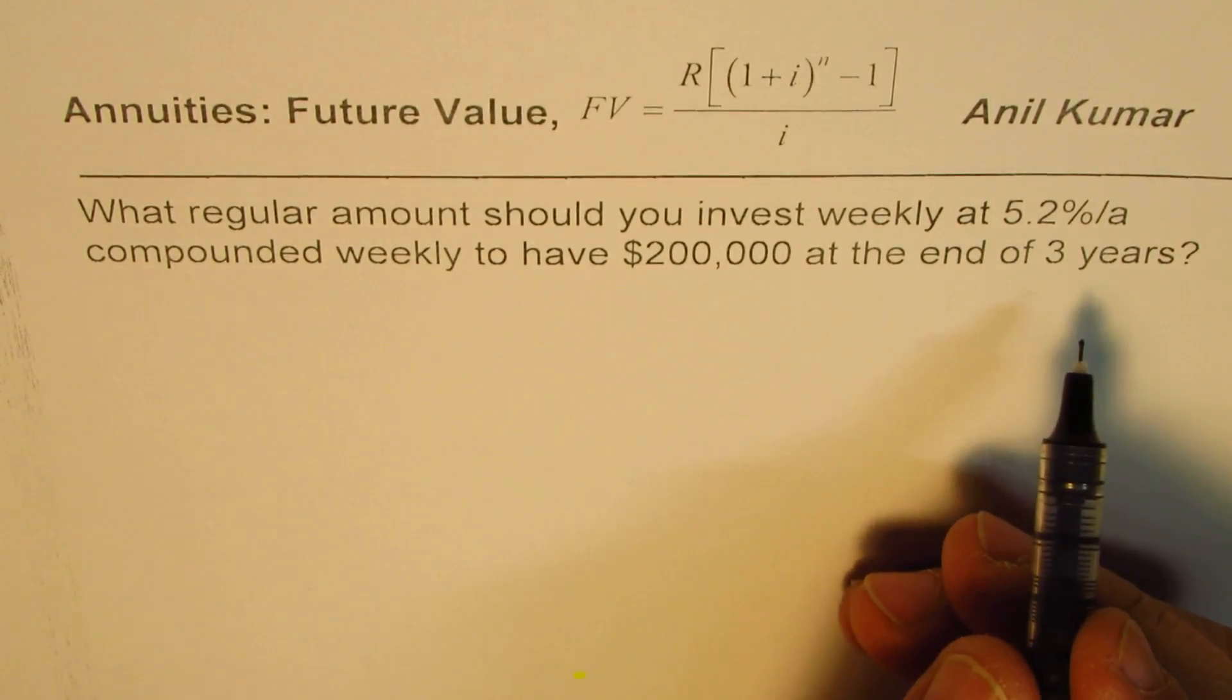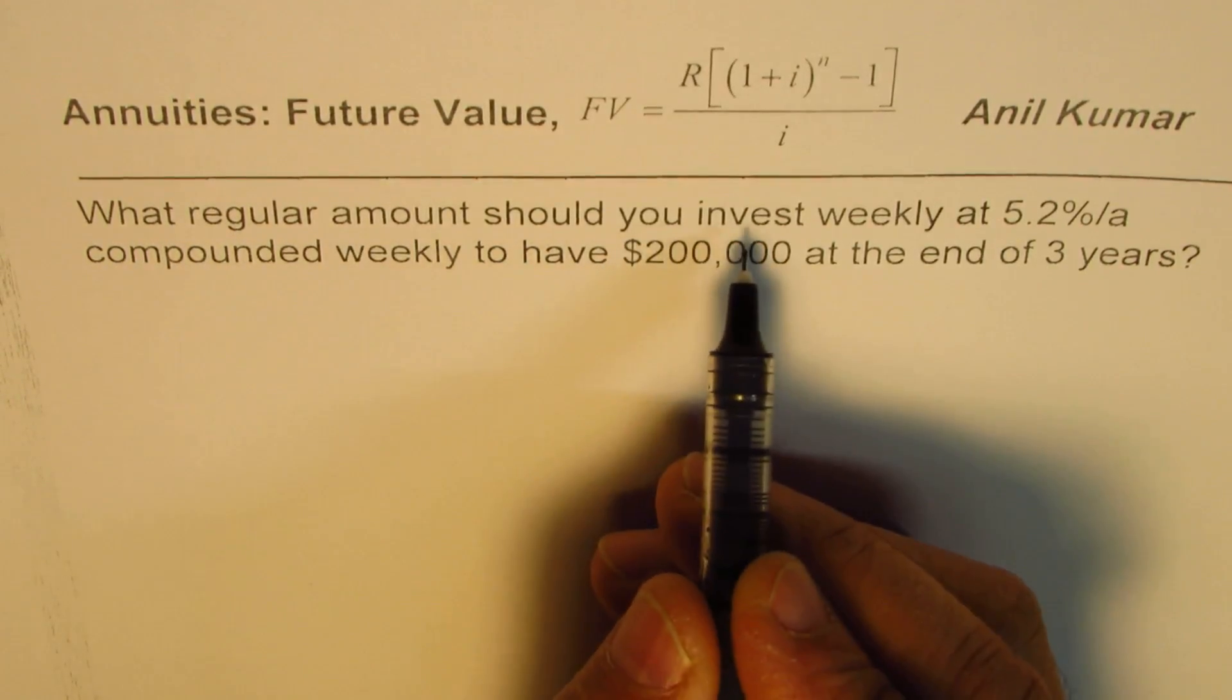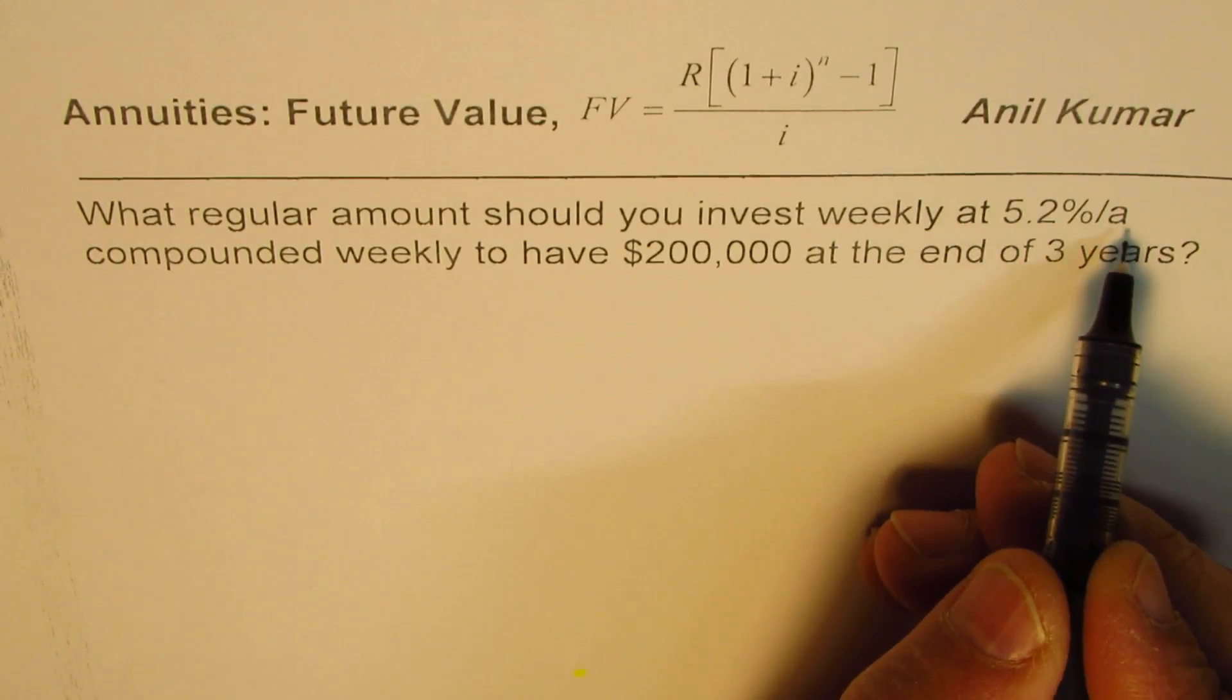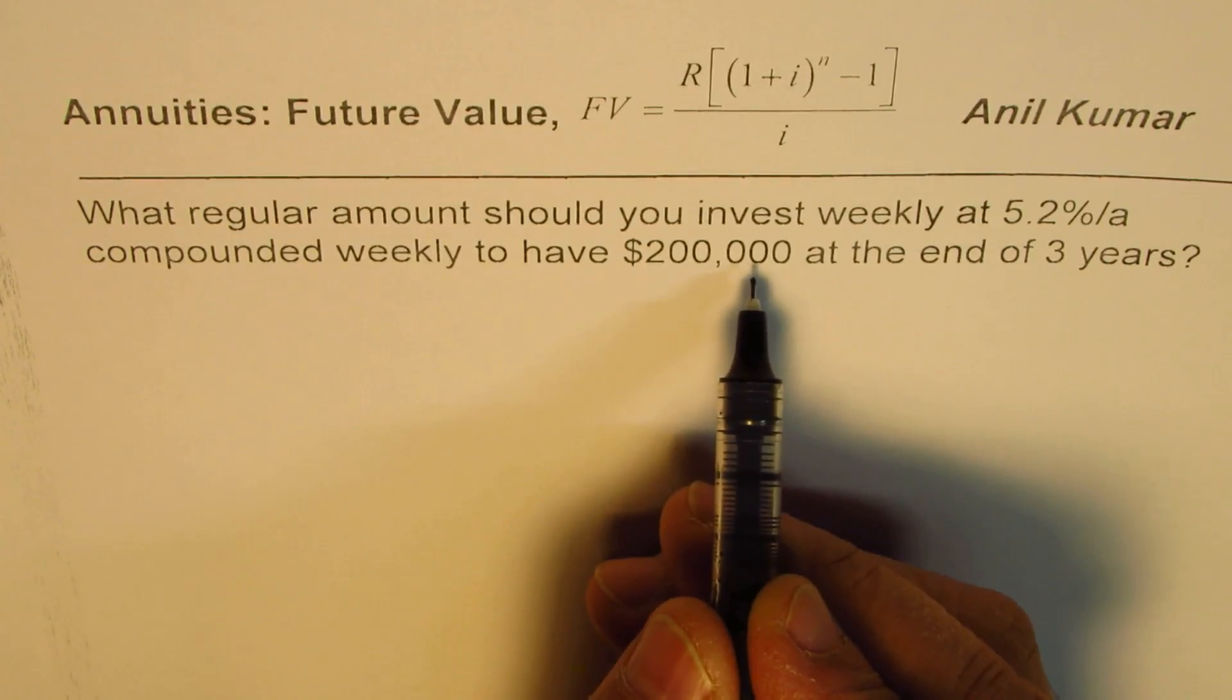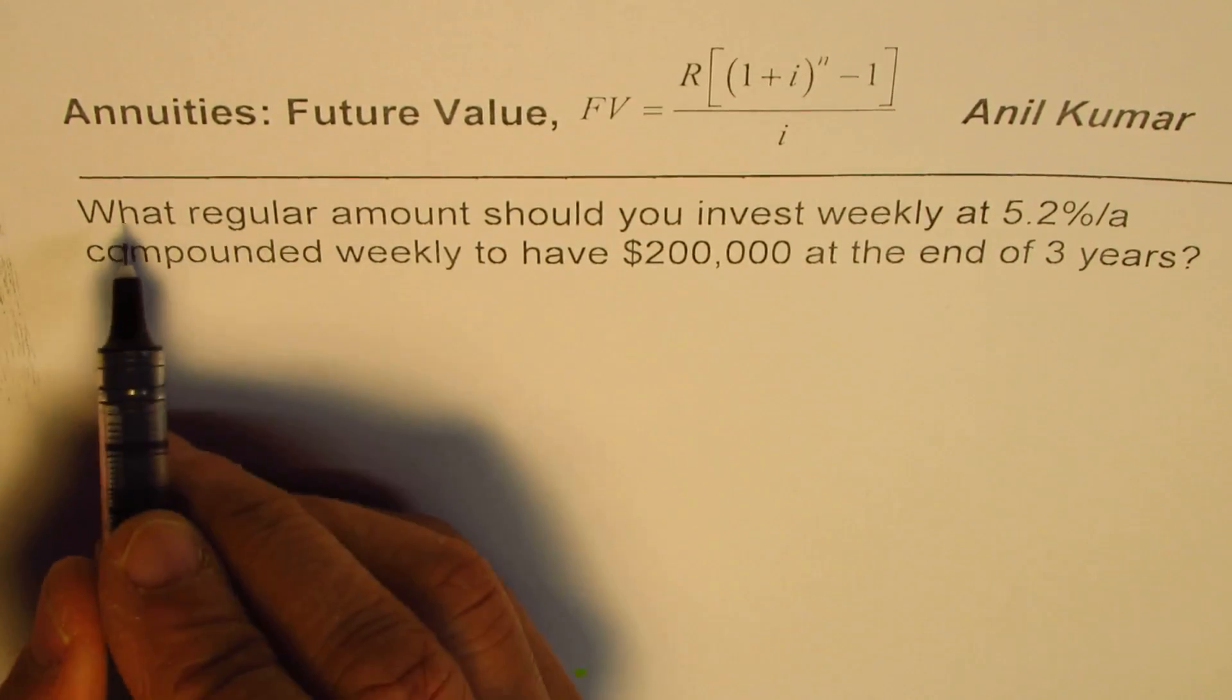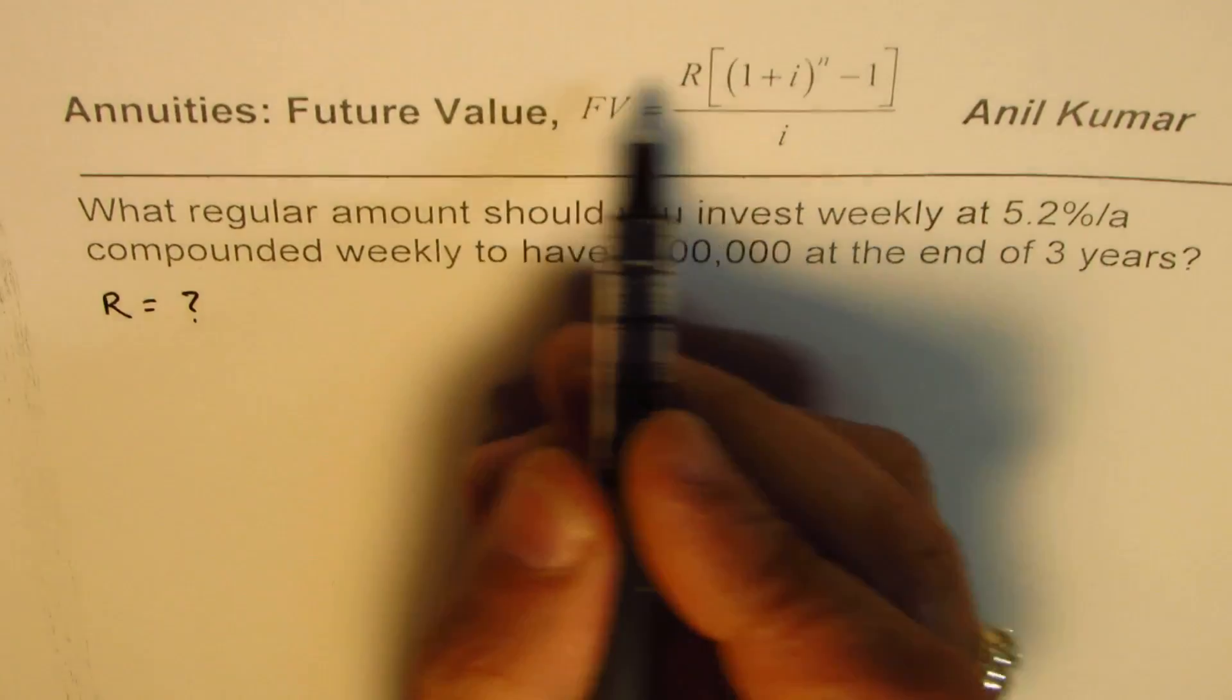The question here is: what regular amount should you invest regularly at 5.2% per annum compounded weekly to have $200,000 at the end of three years? So what regular amount? You need to find what R is. It's kind of reverse calculation.